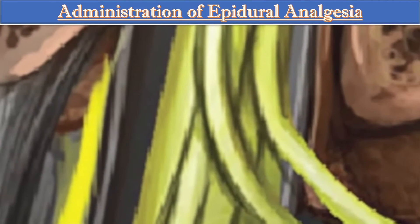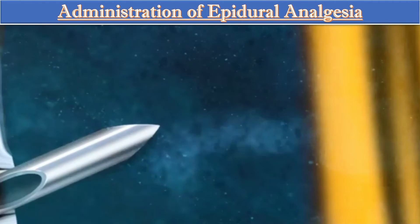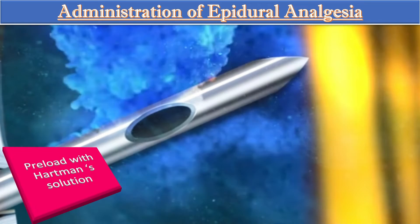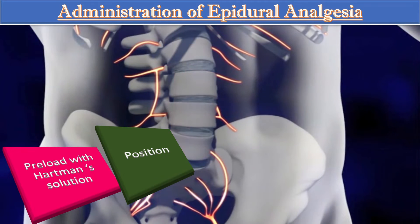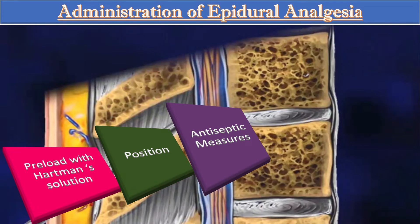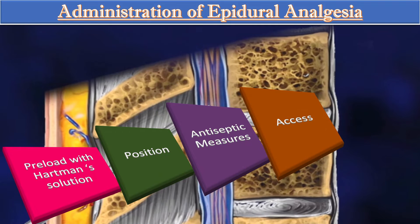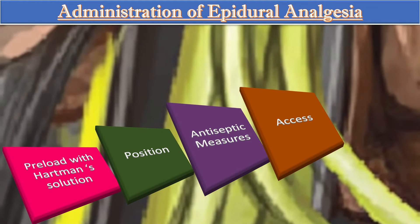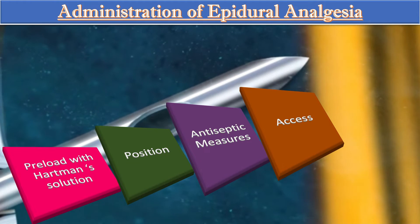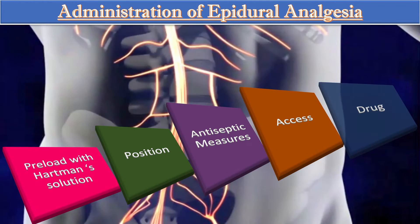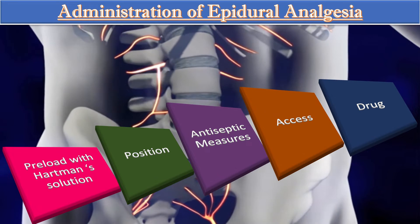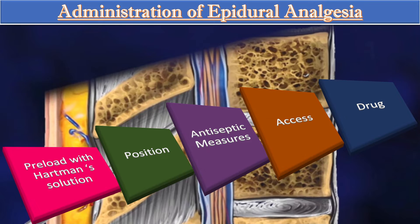For administration of epidural analgesia, first preload the patient with Hartmann's solution and position the patient in sitting or left lateral position. Use appropriate antiseptic measures. After infiltration of local anesthetic, a Tuohy needle is advanced at L3-L4 into the epidural space. Once position is confirmed, the epidural catheter is placed. The drug administered is 0.25% bupivacaine 10 ml after a test dose, repeated after two hours.